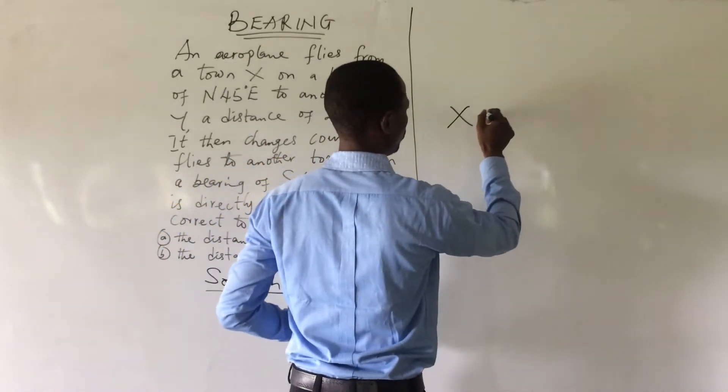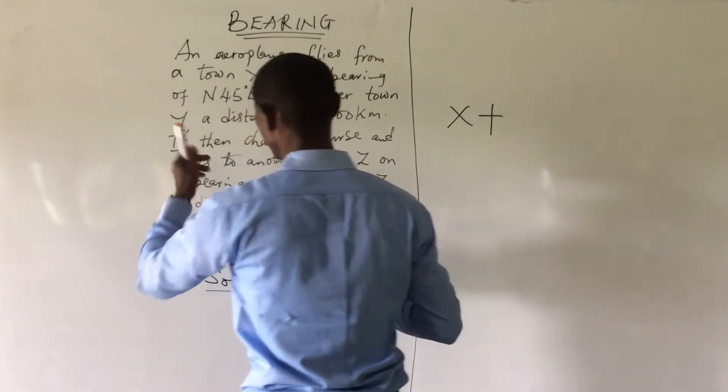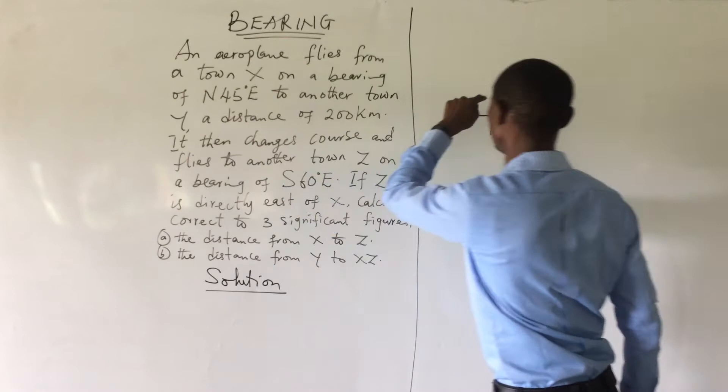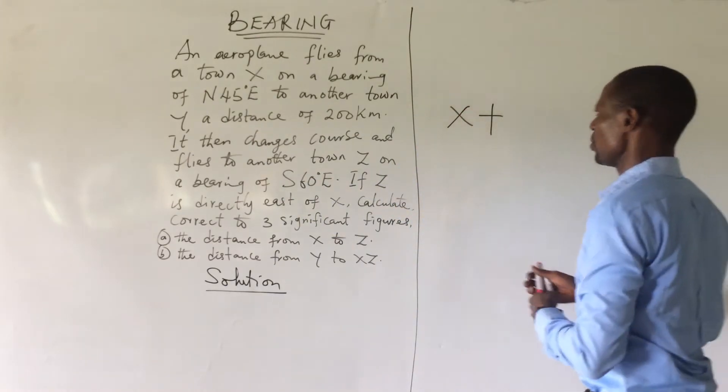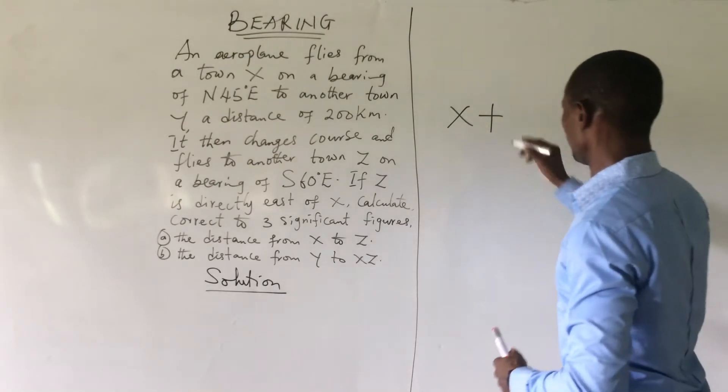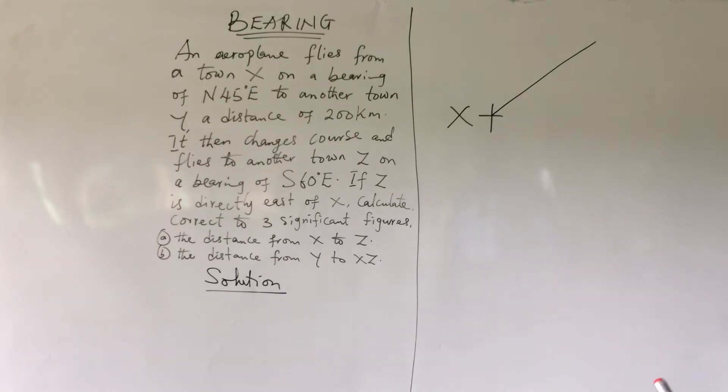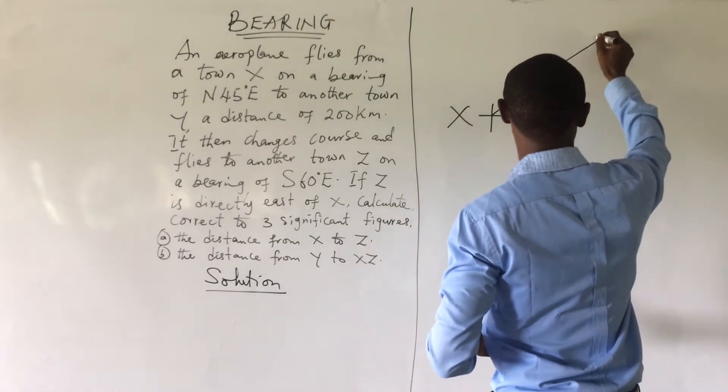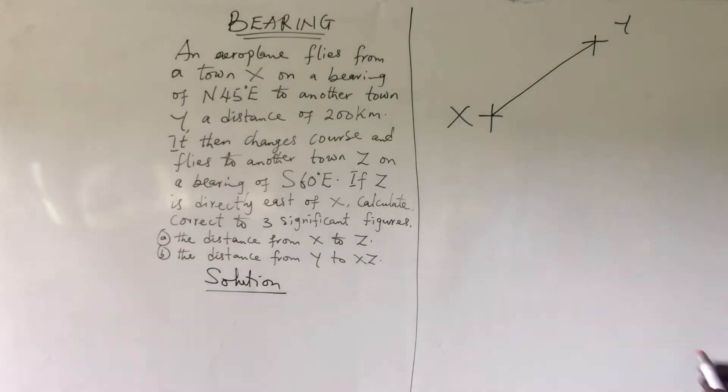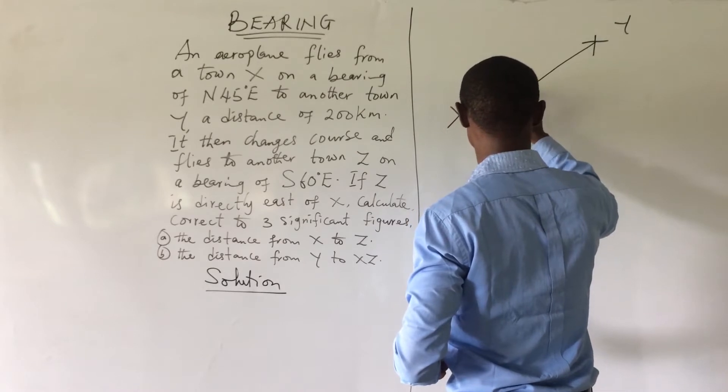If this is town X, you introduce your cardinal point. This is your four cardinal point for town X and the plane begins or starts from here on the bearing 45 degrees northeast. This is your north, this is your east. From here to here, it's 90 degrees. 45 will be directly at the middle. Getting to this town, town Y.